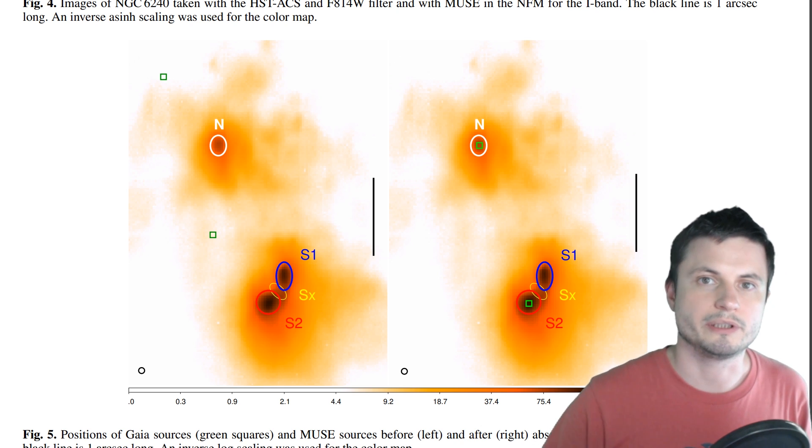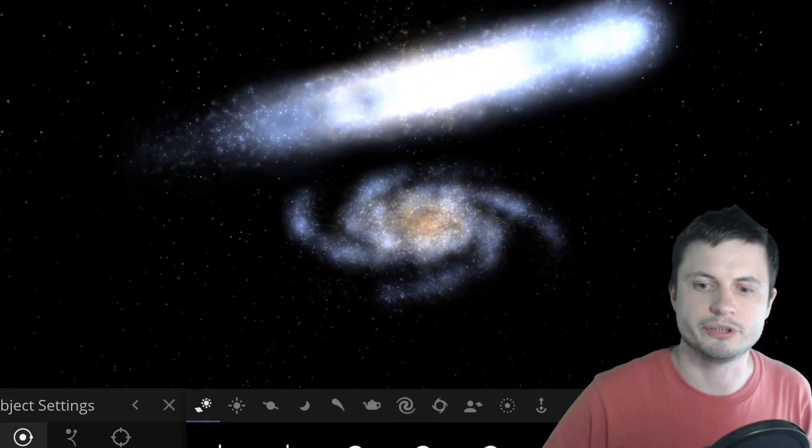But the other main difference between this merger and the one that will happen in our galaxy is the Milky Way, Andromeda, and Triangulum galaxy mergers. Actually, let's just put Triangulum in here so that we now have three galaxies colliding.